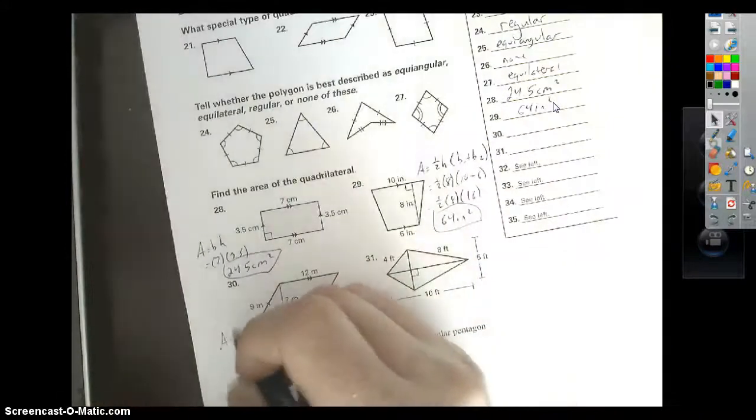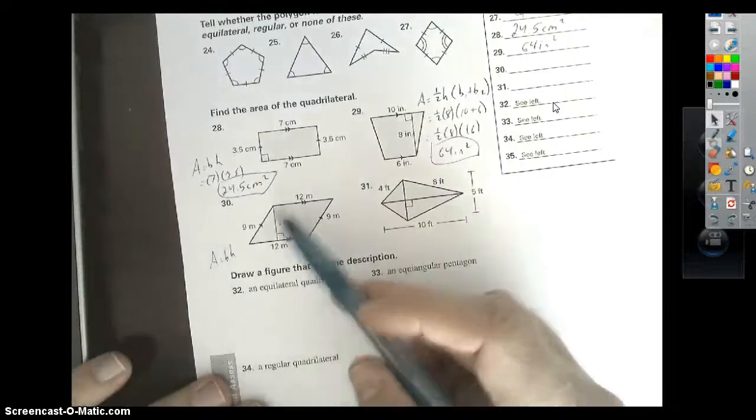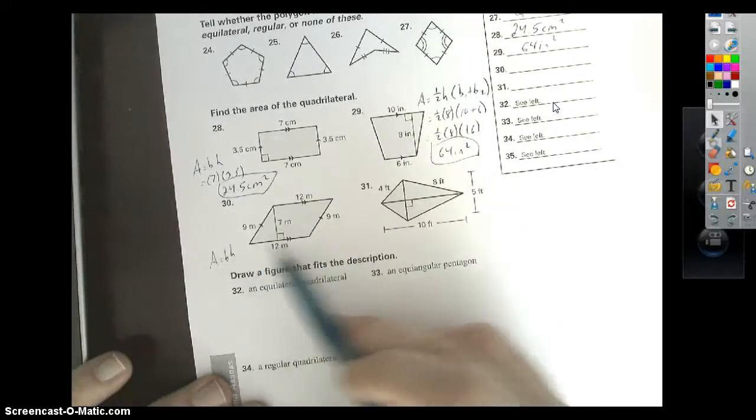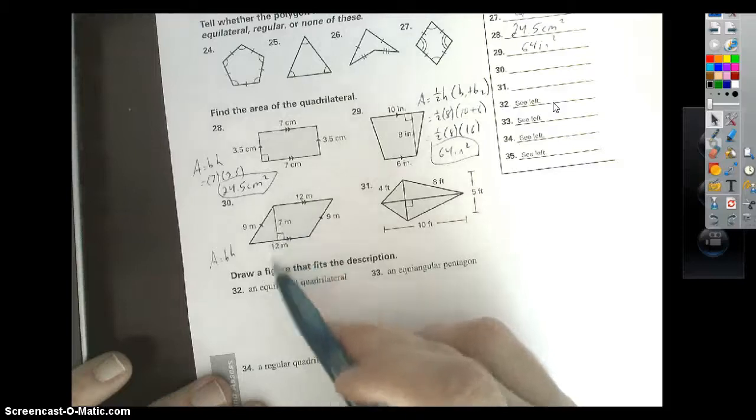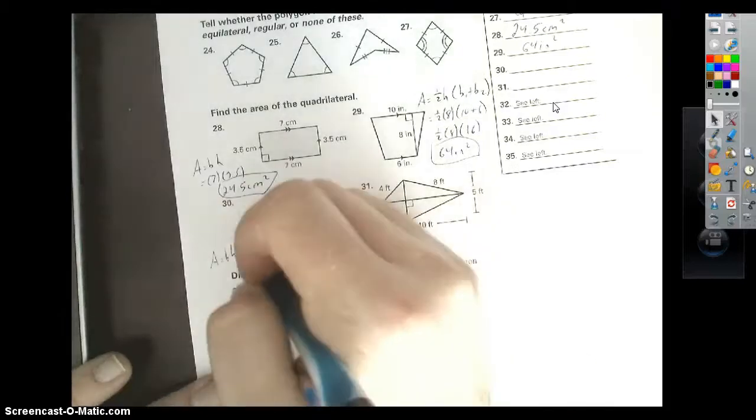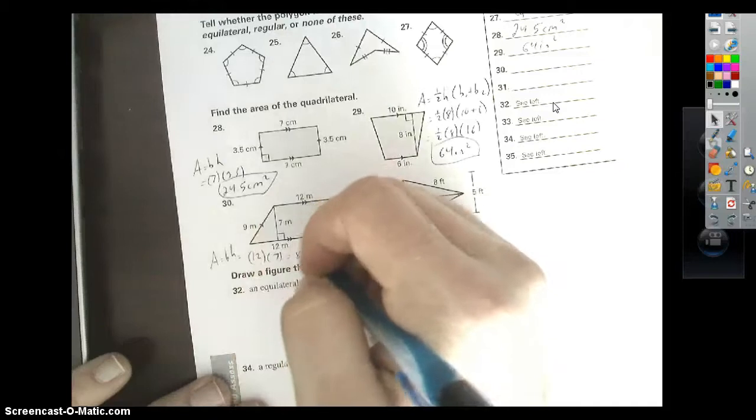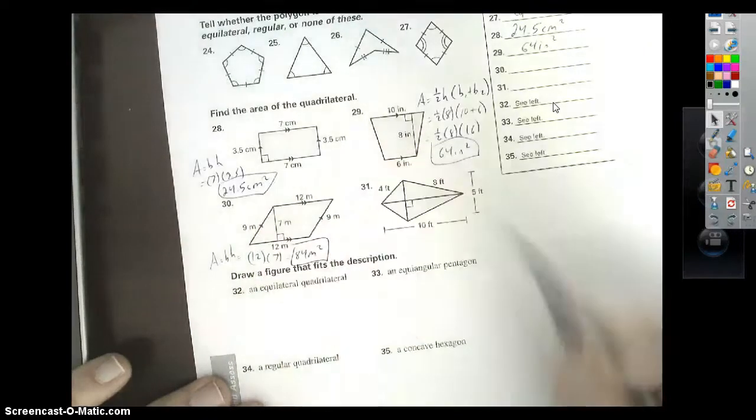Number 30. This is a parallelogram. Base times height. There's some information here you do not need. You need the height, which is 7. You need the base, which is 12. The base is what's perpendicular to it. So we're looking at 12 times 7, which gives me 84 meters squared.